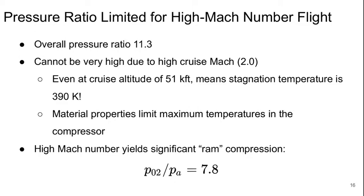Because this is meant to fly around on the Concorde, which had a cruise Mach number of 2, we can't have too high of an overall pressure ratio for the engine. So the value here is 11.3. And this is because even at the cruise altitude of 51,000 feet for this aircraft, the stagnation temperature coming into the engine is 390 Kelvin.